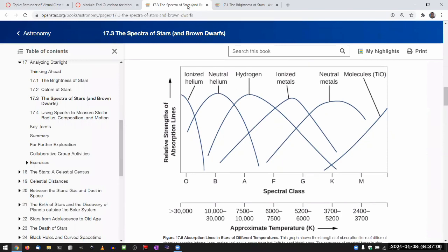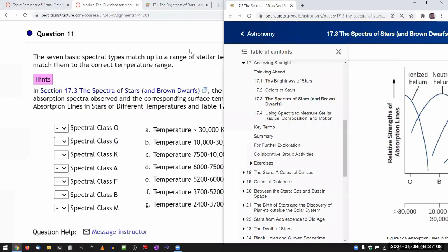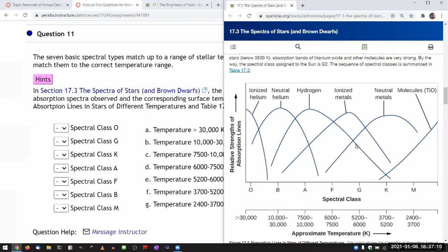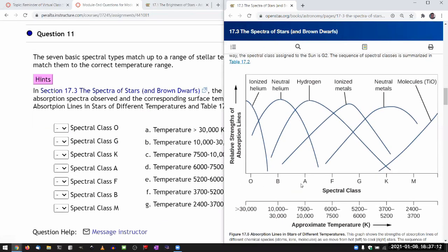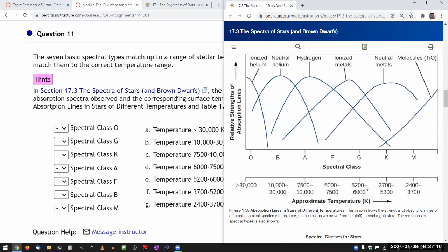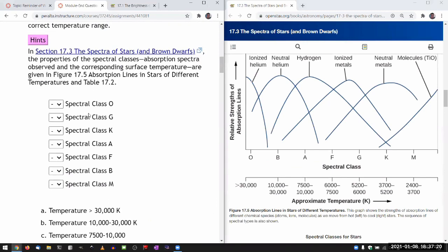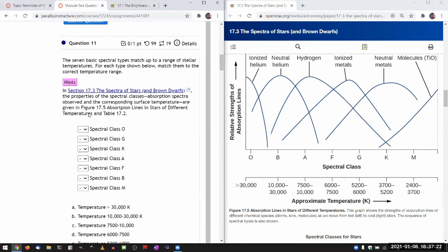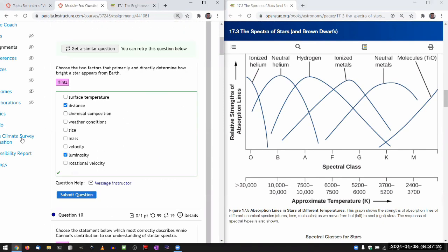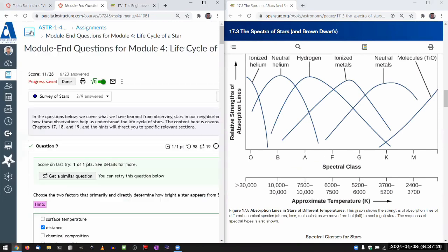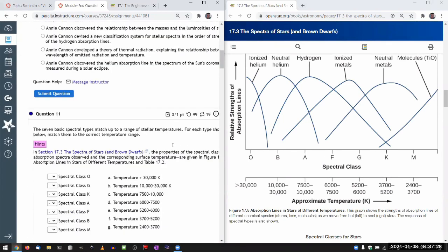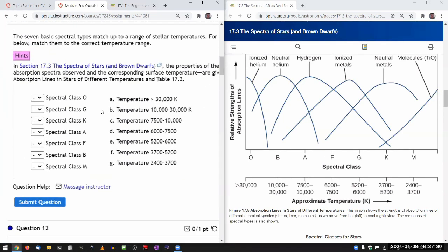This is one of the places where they will tell you basically how each classification—O, B, A, F, G, K, M—corresponds to each temperature. So you could technically do something like this, you could do something like this.